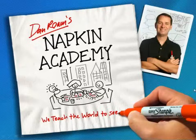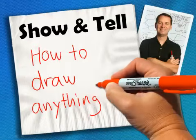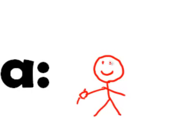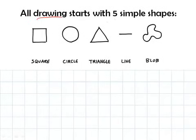This is Dan and this is the Napkin Academy. Today we're going to be talking about how to draw anything. Take a moment and go grab a pencil and a sheet of paper, and all drawing starts with just five simple shapes.